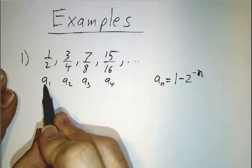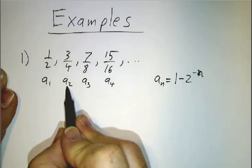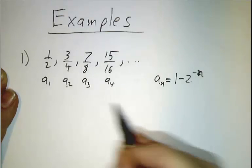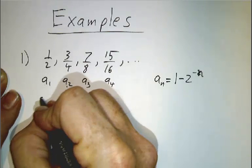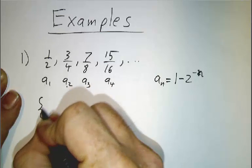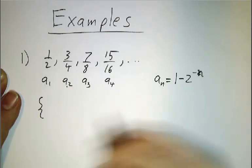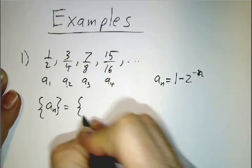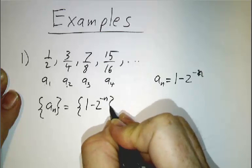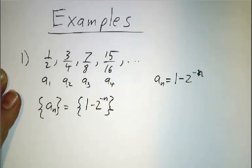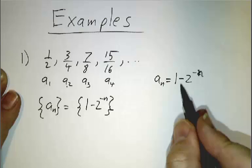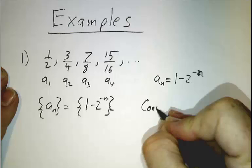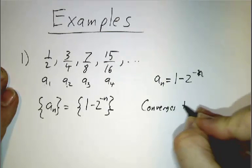So this is 1 minus 1 half, 1 minus 1 quarter, 1 minus 1 eighth, 1 minus 1 sixteenth. We can also express the whole sequence in braces with the formula in the middle. And it's obviously getting closer and closer and closer to 1 — so this converges to 1.